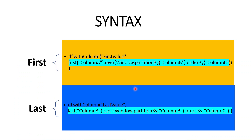Coming to syntax, this is similar to any window function. To create a new column first_value in data frame DF, I use withColumn with the first function. The syntax starts with the keyword first, within that I give the column — in our case, transaction date. Then I use the over clause, within which I use Window.partitionBy based on the key column, which is customer ID. Order by is optional — it can be used when we need to order based on a particular column. This is the syntax for the first window function.